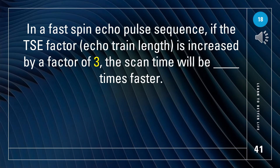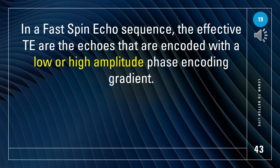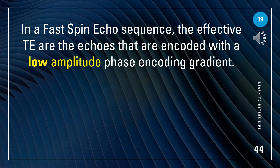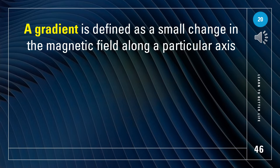In a fast spin echo pulse sequence, if the TSE factor (echo train length) is increased by a factor of 3, the scan time will be 3 times faster. In a fast spin echo sequence, the effective TE echoes are encoded with a low amplitude phase encoding gradient. A small change in the magnetic field along a particular axis is defined as a gradient.